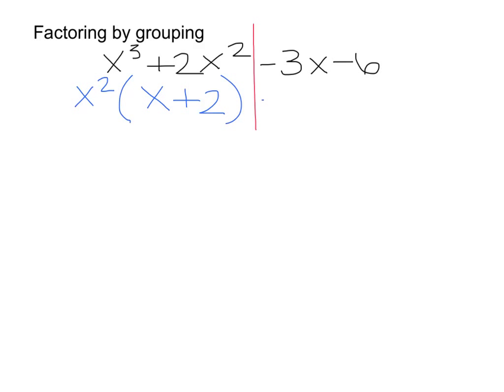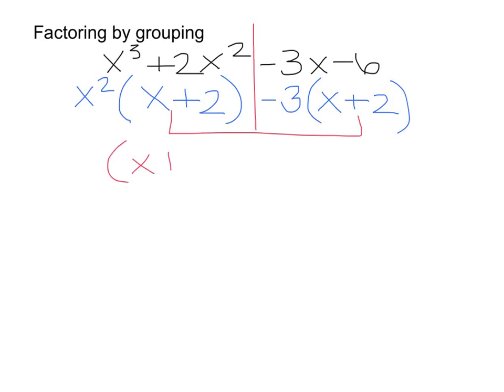Whatever sign comes next, you bring down. What goes into 3x and into 6? 3 goes into both, but you're treating it as negative 3. So negative 3x divided by negative 3 leaves you with x, and negative 6 divided by negative 3 leaves you with positive 2. Since both parentheses match as x plus 2, you factor out x plus 2 and you're left with x squared minus 3.